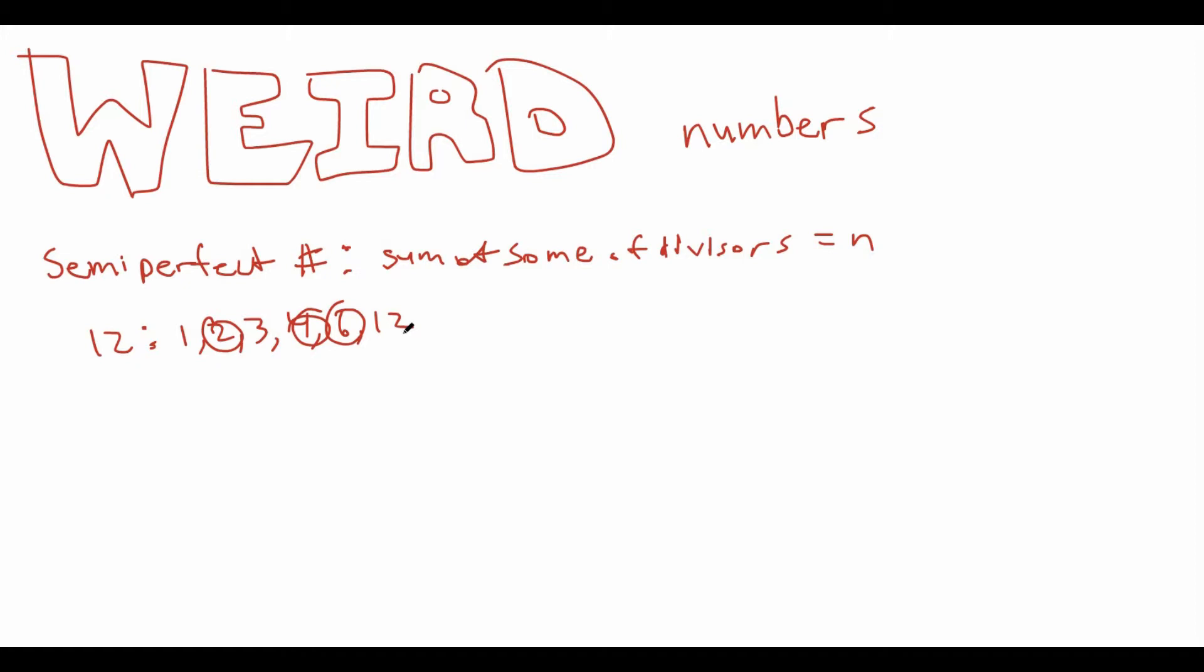Now, we can define what a weird number is. A weird number is equal to an abundant number that is not a semi-perfect number.